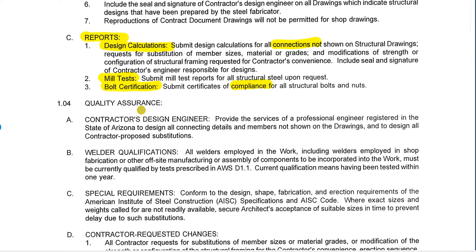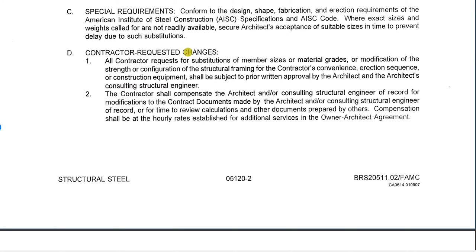The next section is quality assurance, which talks about things that may be performance specified. Connections in steel are typically performance specified, meaning the contractor is responsible for designing the connections. We also have things done in the field and in the shop, such as welder certification, the design engineer, and other special requirements. You'll also see the process for looking at changes on the drawings — different fab shops are set up to do things in different ways, so the steel fabricator can ask for substitutions in sizes to make things work a little bit easier.